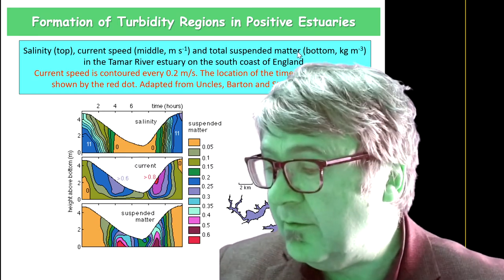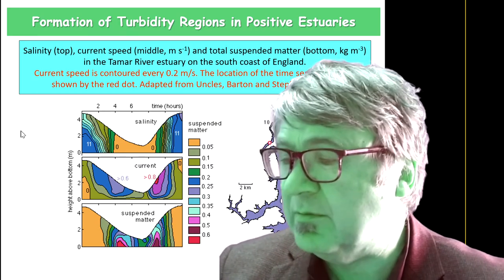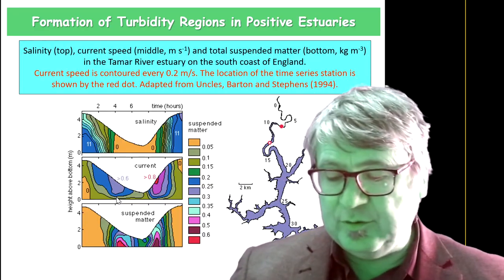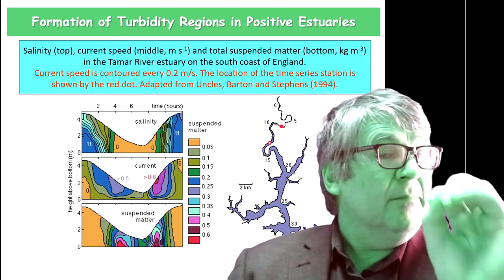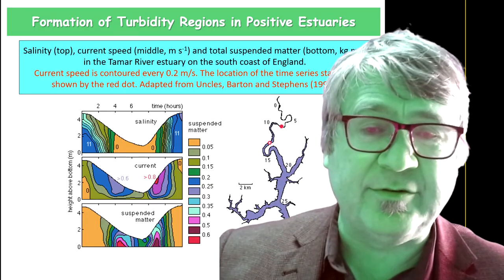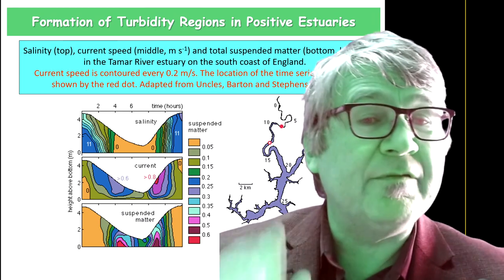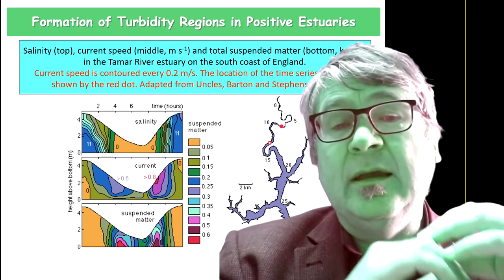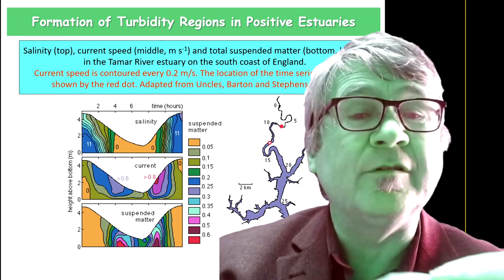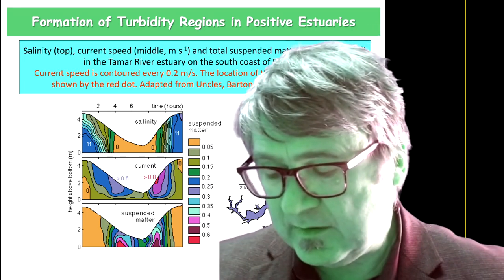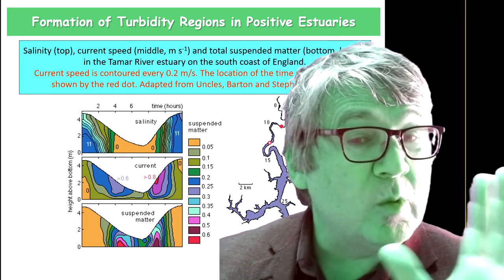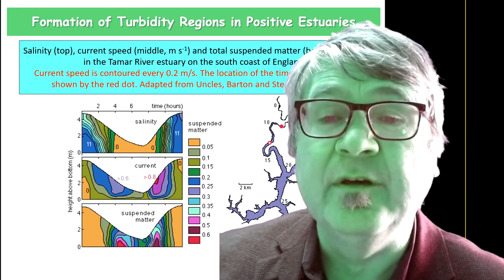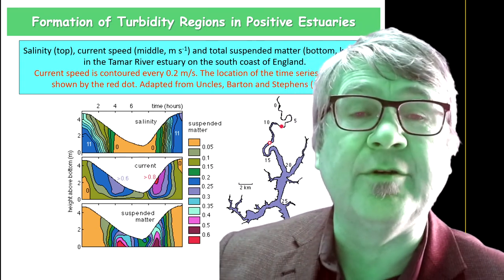That's one example of a turbidity region. Those are the two examples, but this occurs in all positive estuaries. Sediment accumulates over time and it often has to be dredged away. We don't have that problem in the inverse estuaries in South Australia.